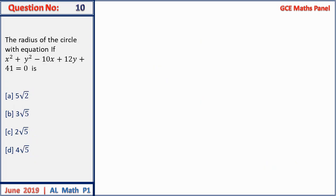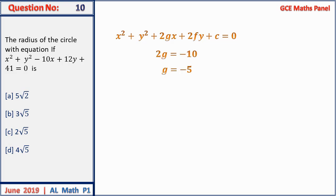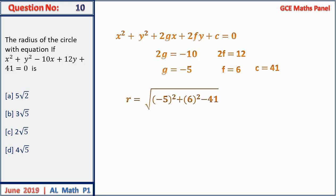Question 10: find the radius of the circle given in general form x² + y² + 2gx + 2fy + c = 0. Here 2g = −10, so g = −5; 2f = 12, so f = 6; c = 41. The radius = √(g² + f² − c) = √(25 + 36 − 41) = √20 = 2√5. Answer C.